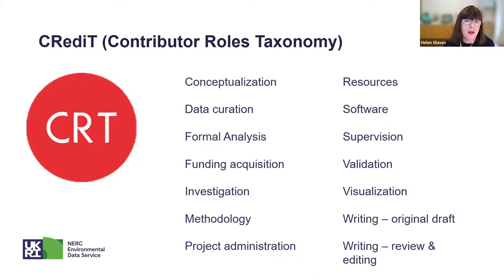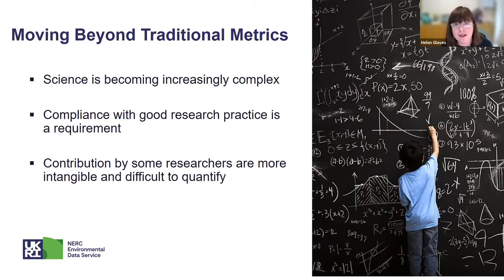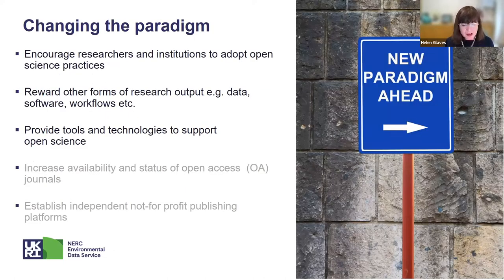Science is becoming increasingly more complex, and compliance with good research practices is more of a requirement than ever. We're increasingly talking about the need for data management plans and ensuring that data and research assets are lodged with an appropriate repository. Some researchers' contributions are becoming more intangible and difficult to quantify. We need to move beyond the current paradigm and start thinking about how to encourage greater adoption of open science, which will allow us to reward other forms of research outputs such as data, software, and workflows.